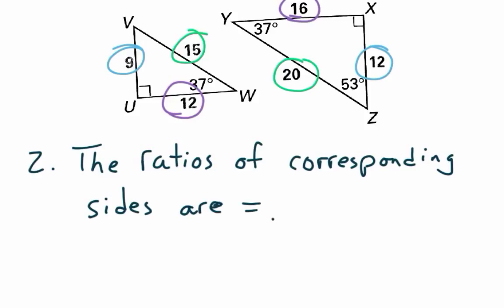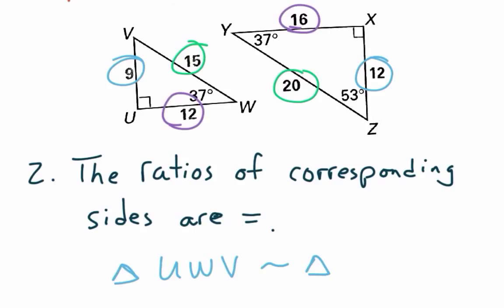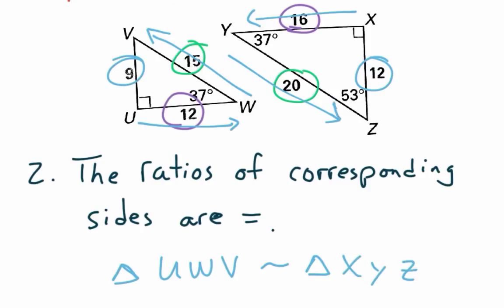Maybe the very last thing — if we were to write this, you could say triangle UWV is similar to triangle — the similar symbol is half of a squiggly equals, half of an approximately equals sign. I started with U, went to W, went to V, so on the other triangle I'd start with X, Y, Z. You have to start in the same spot, start with that same degree angle, and work around in the same direction. That's all.